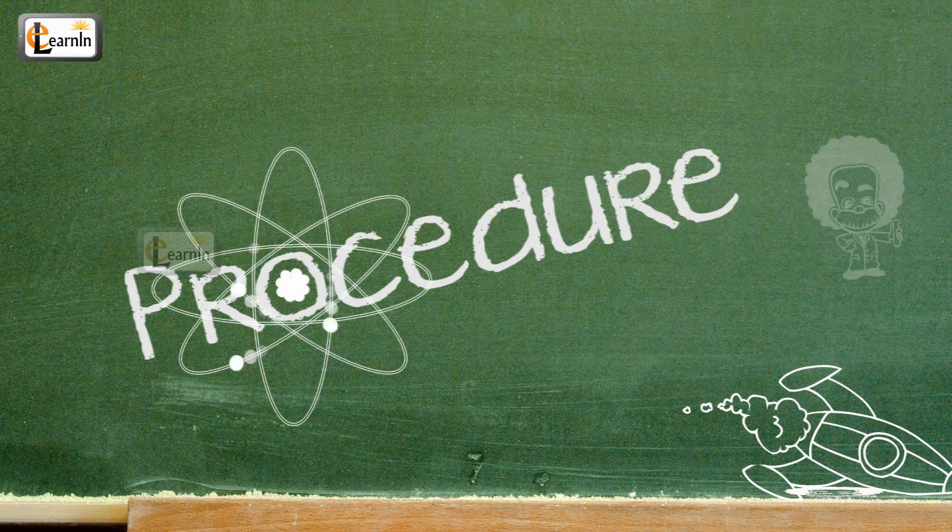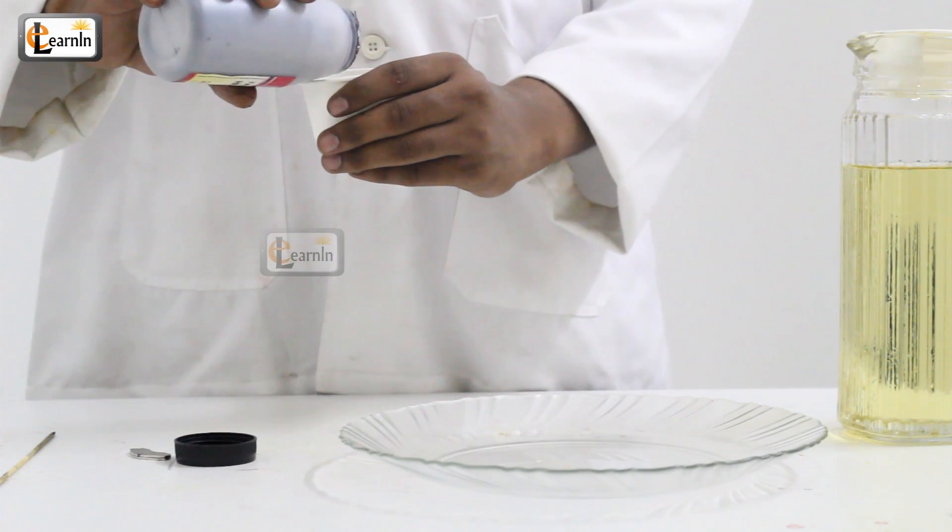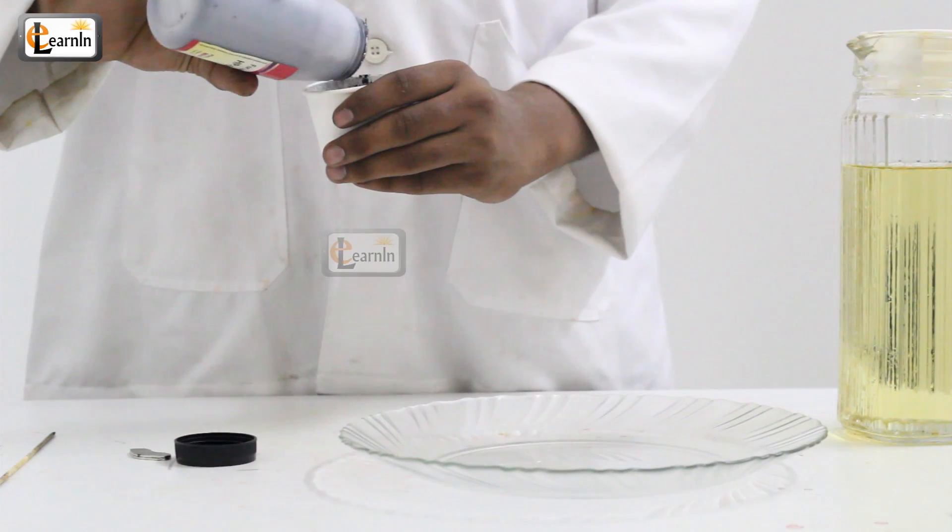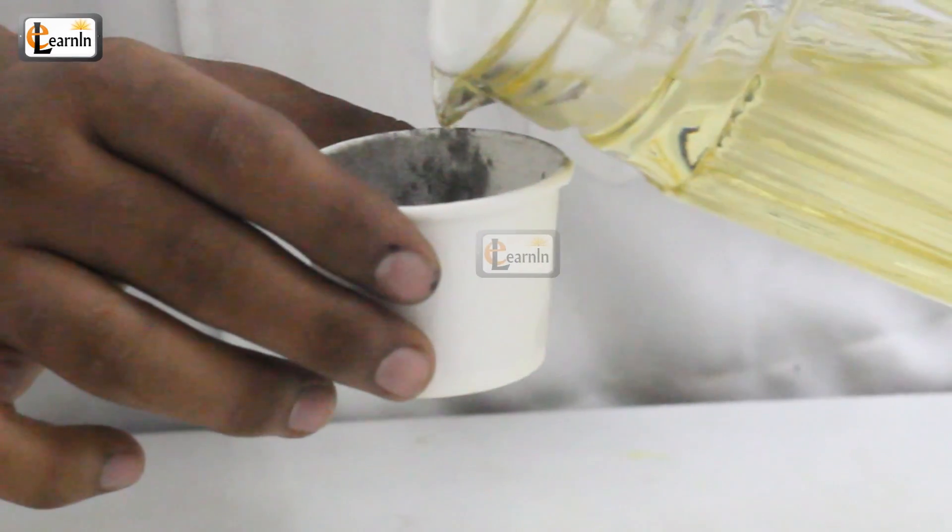Procedure: Take half a cup of laser printer toner powder. Add some oil to this powder and stir.